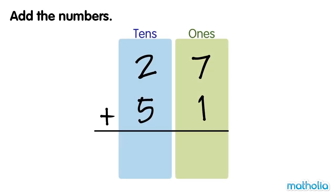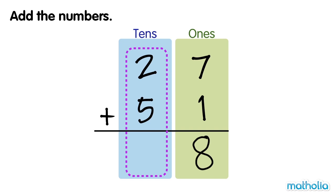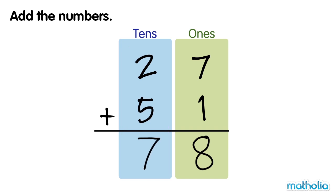Add the numbers. 27 plus 51. First, let's add the ones. Seven ones plus one one equals eight ones. Next, let's add the tens. Two tens plus five tens equals seven tens. 27 plus 51 equals 78.